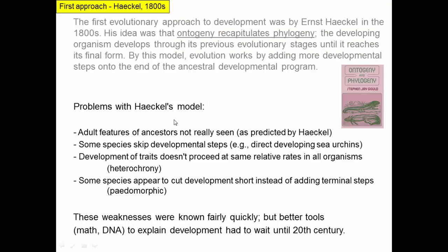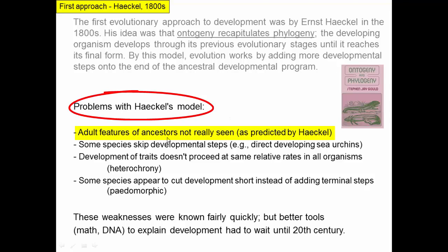It turns out that Haeckel's model is really nice for motivation and not too bad for the 1800s, but doesn't really hold up that well under modern scientific scrutiny. This book by Stephen Jay Gould, which was also mentioned earlier in the course, was him going back and revisiting Haeckel's ideas with 20th century understanding. Some of the problems include that the adult features of ancestors are not actually seen as Haeckel would have predicted — we don't see the adult features of fish during our developmental trajectory, which we would expect to see under his model.